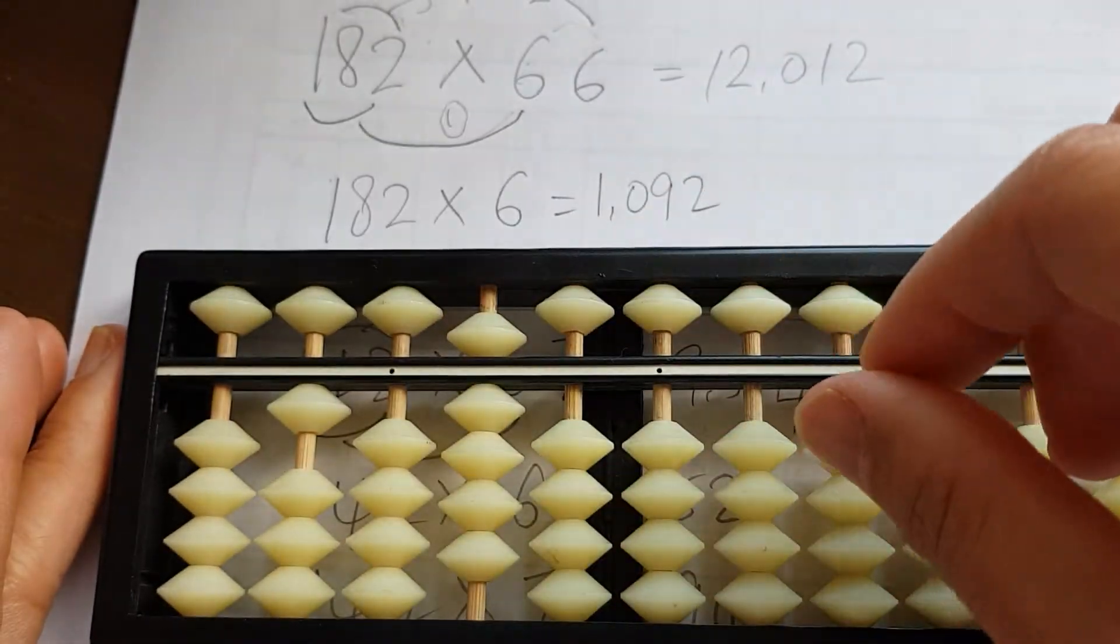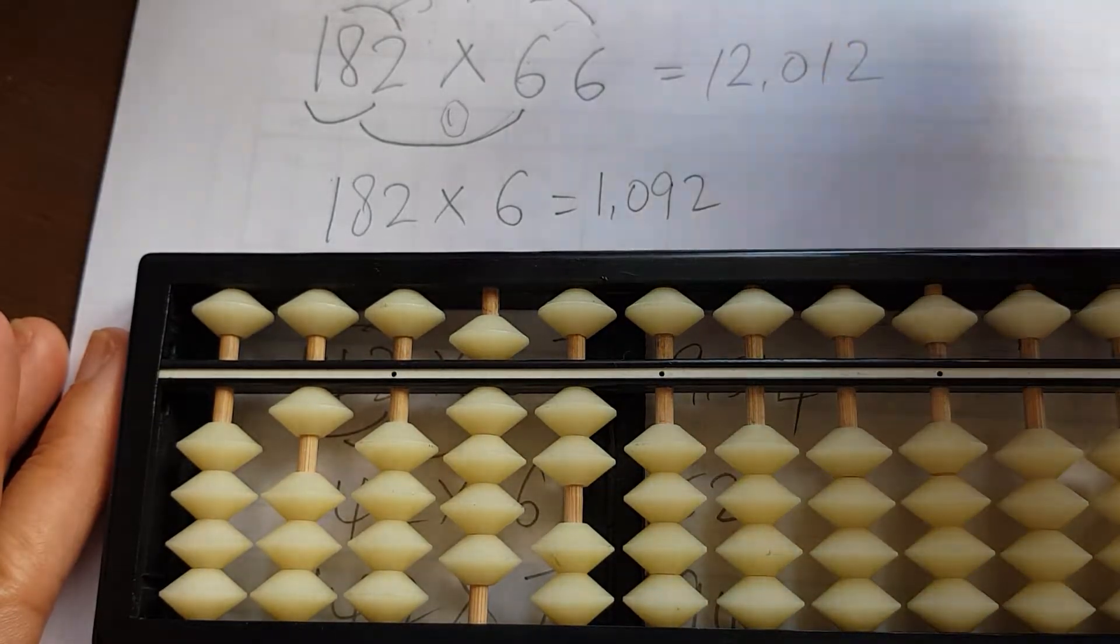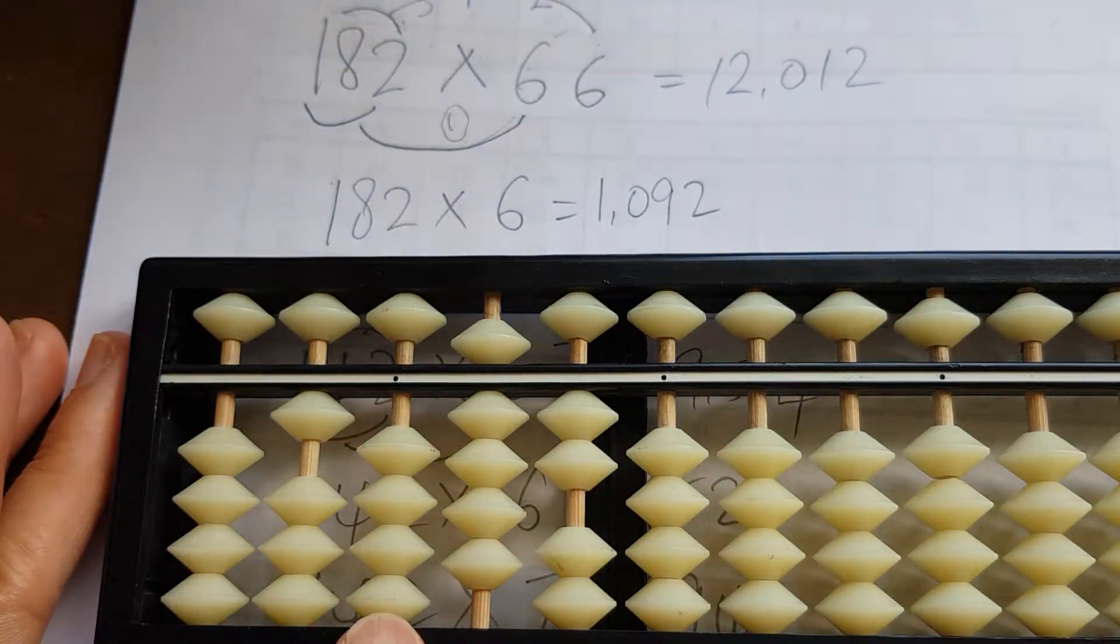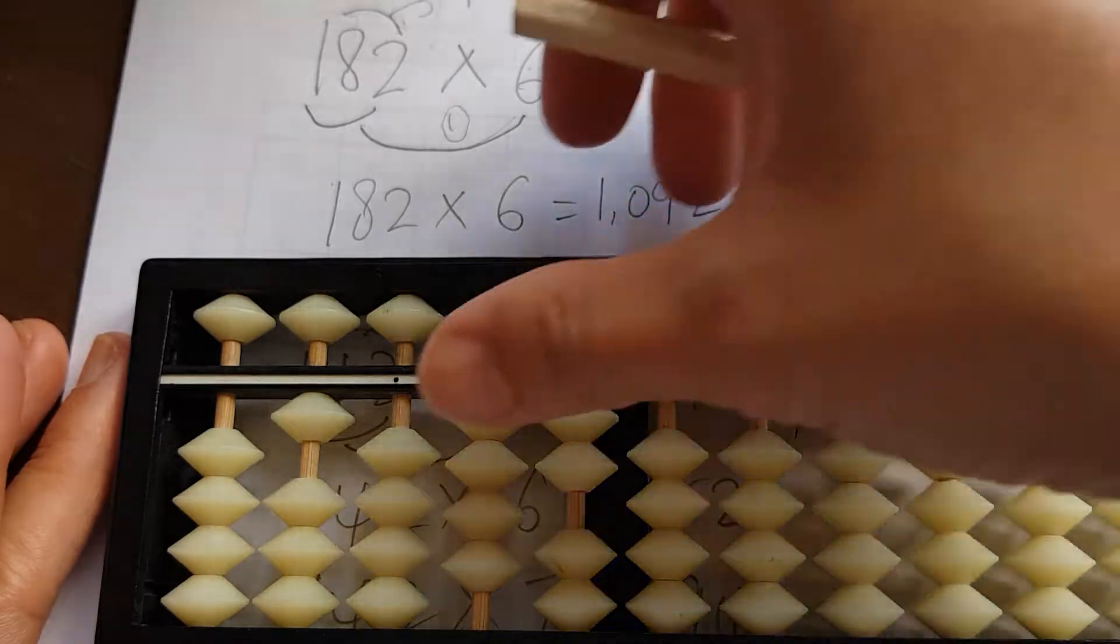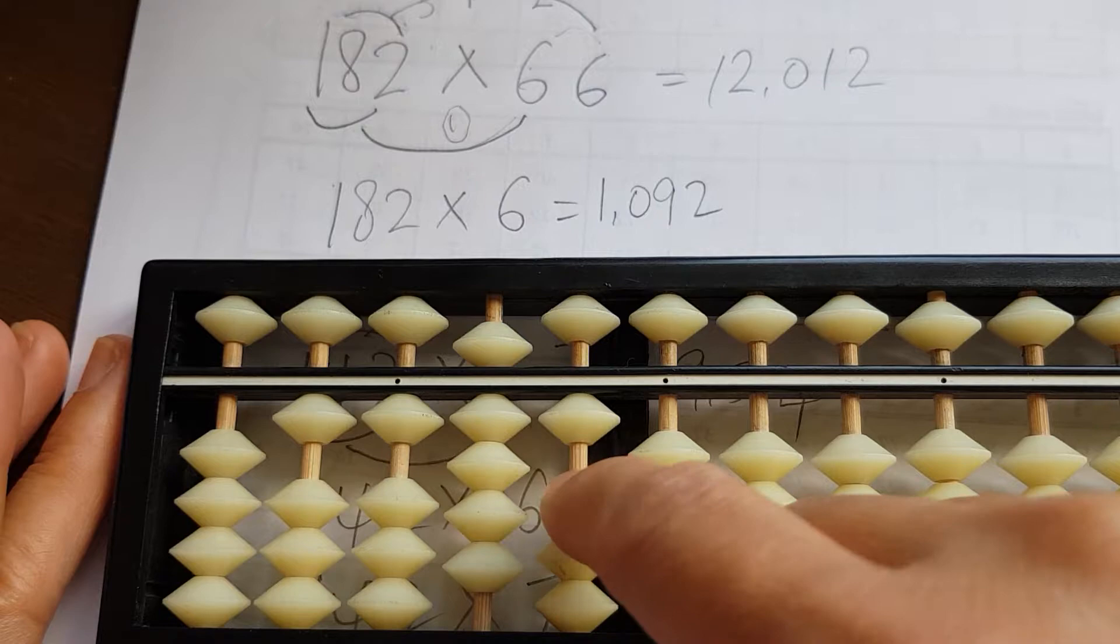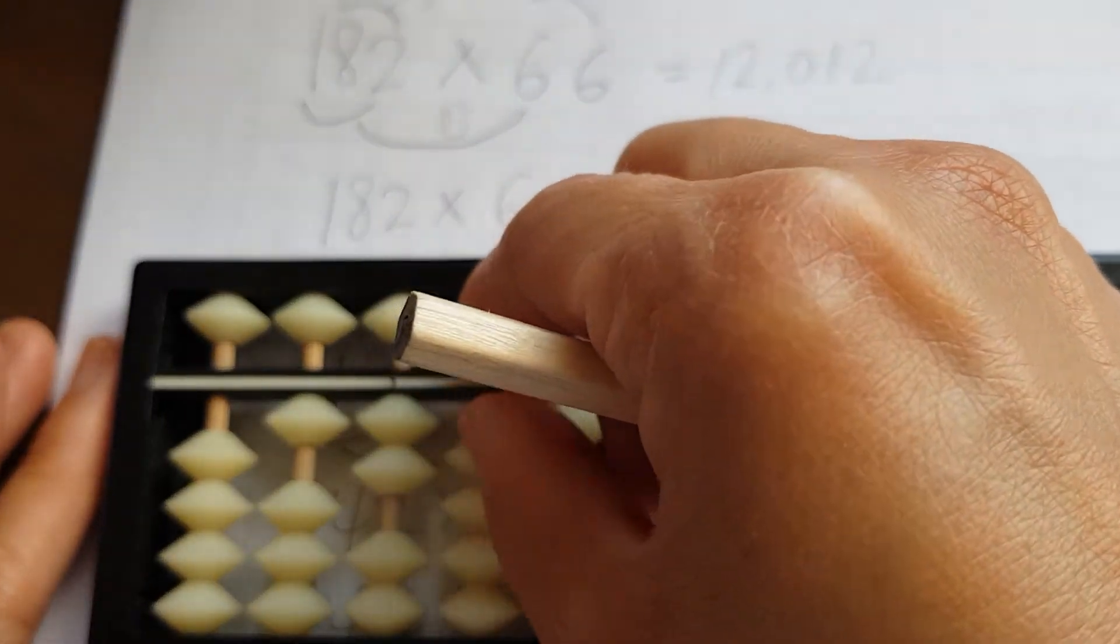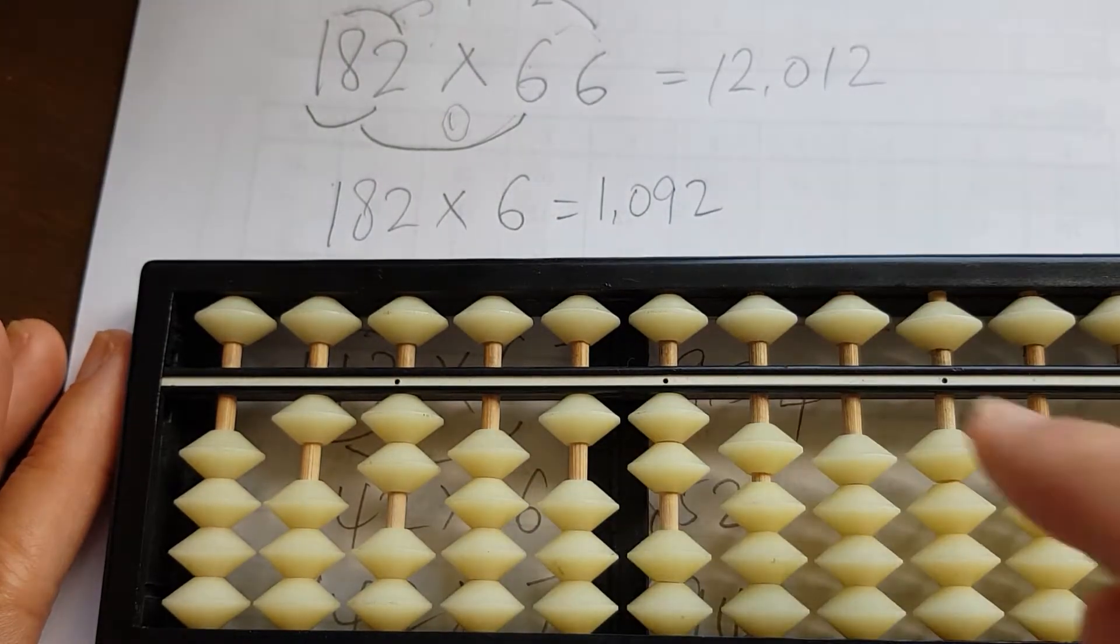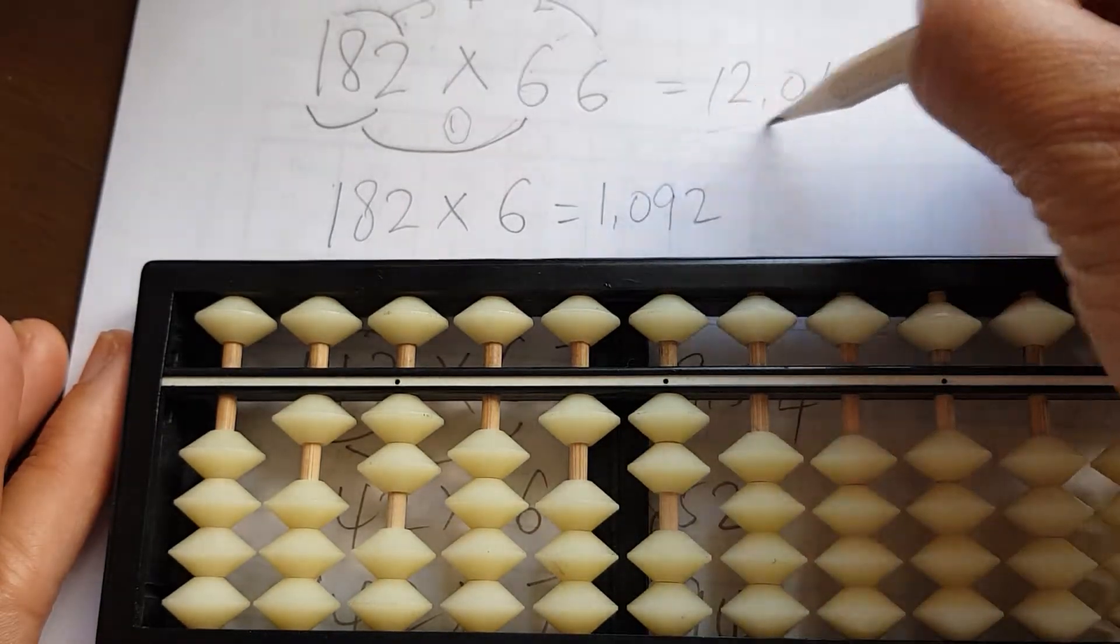Because the same multiplication happens—182 again times six—we need to place 1092 on this column. We're going to place 1000, add 90, then take away 10 and add 100, then add two. So the answer is 12,012 as is shown here.